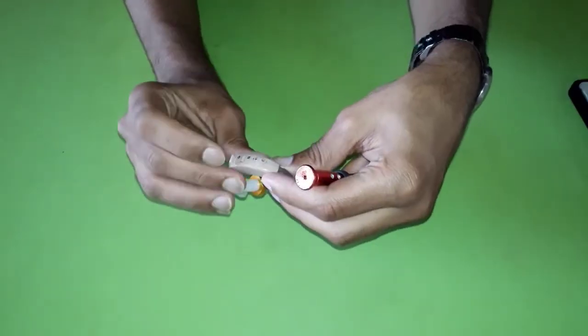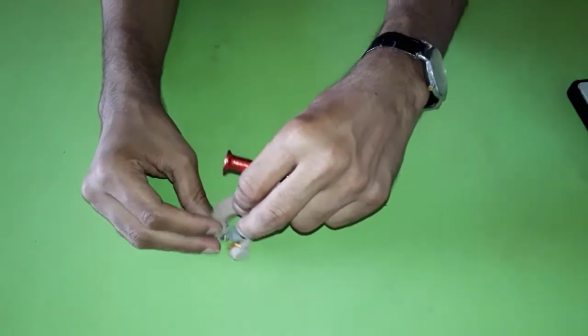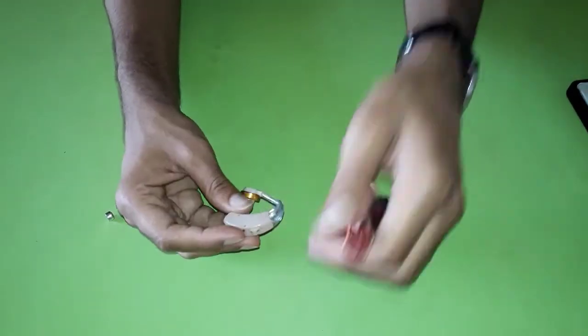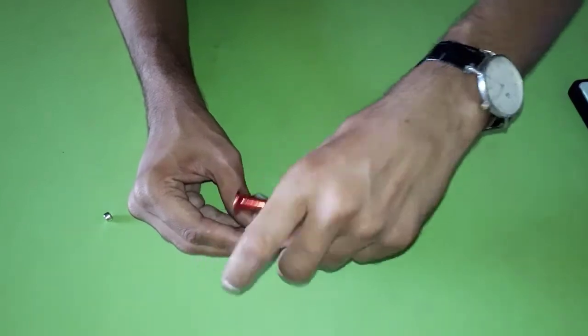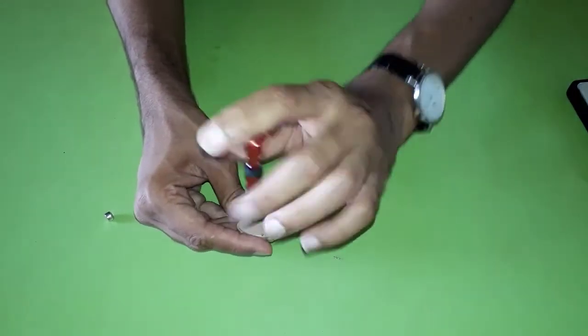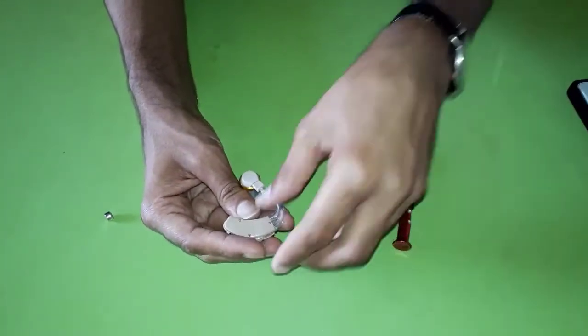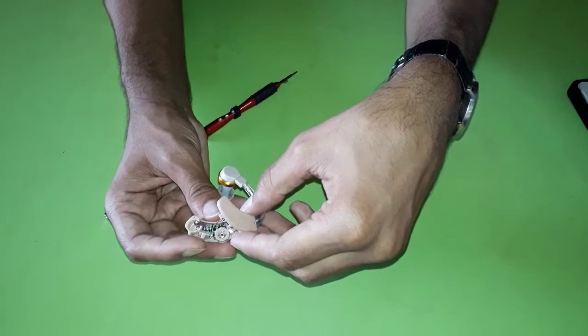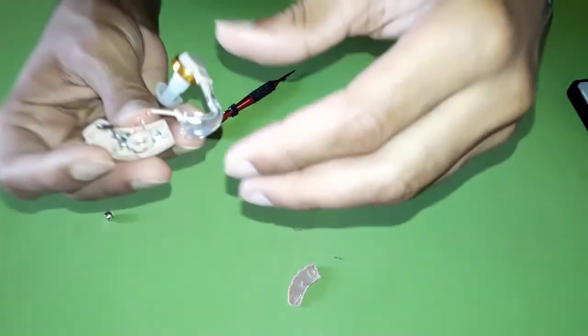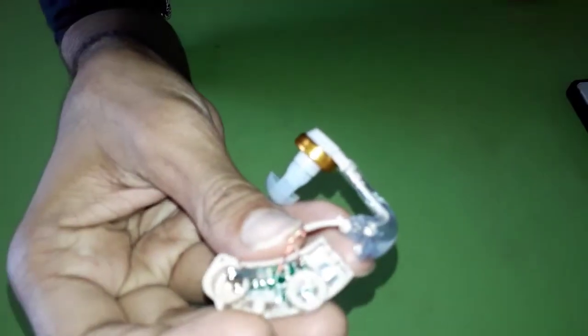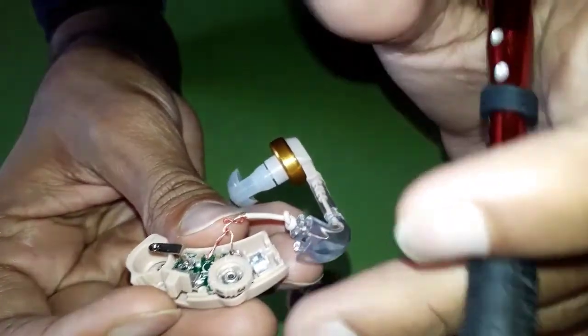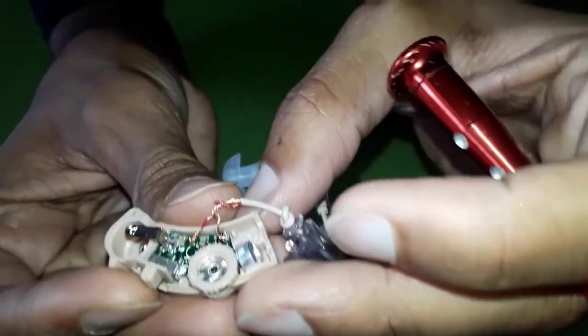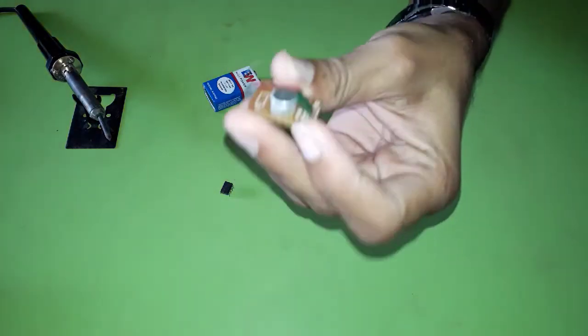Now we will see inside this device. First of all, remove the button. Here you can see inside - maybe it's not much clear, but this one is the mic and this portion is the amplifier, and here is the speaker. Now we know the components of this device, and now I am gonna make it by myself.